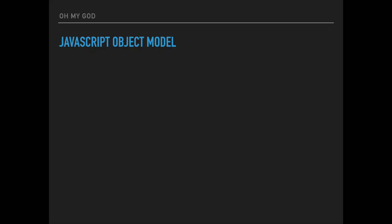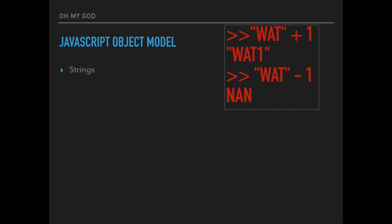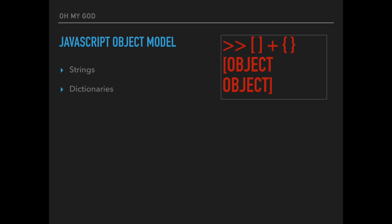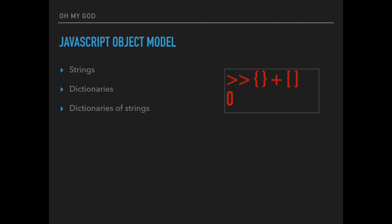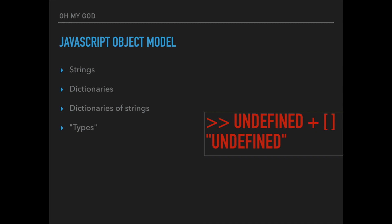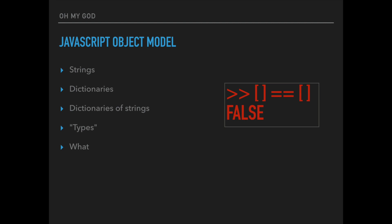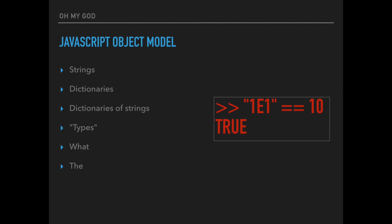The JavaScript object model is a lot of fun. It has strings — you can add those strings to numbers and those numbers will just become strings magically. You can also subtract numbers from strings, but then that becomes 'not a number,' of course. It also has dictionaries — lots and lots of dictionaries. An array plus an object is basically a dictionary. And flipping the addition around gives you the same result — if anyone knows what's going on with that, that's awesome.